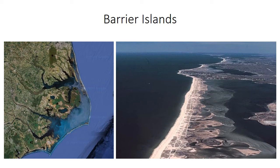The final depositional setting we're going to cover in our parade of coastal environments is the barrier island system. Living in California, we don't get to see barrier islands that much, but they're very widespread on modern coasts around the world, including the Atlantic coast and the Gulf coast of the U.S. Barrier islands don't include that many new depositional sub-environments — we've covered most of the components in previous videos, but in the barrier island they can be combined in different ways, and there's interesting behavior when these systems migrate.